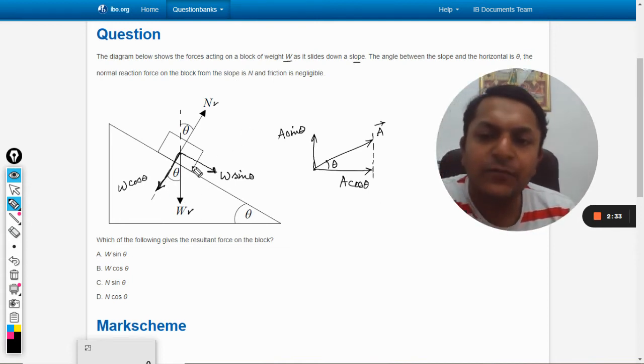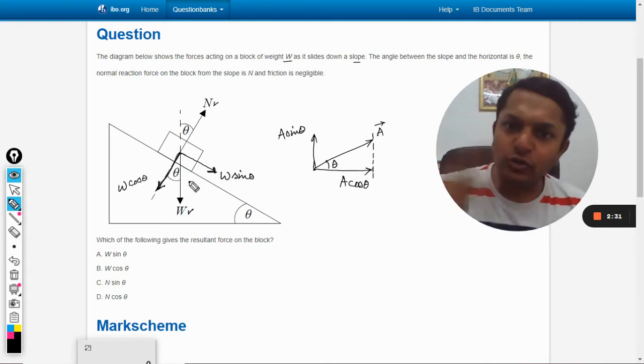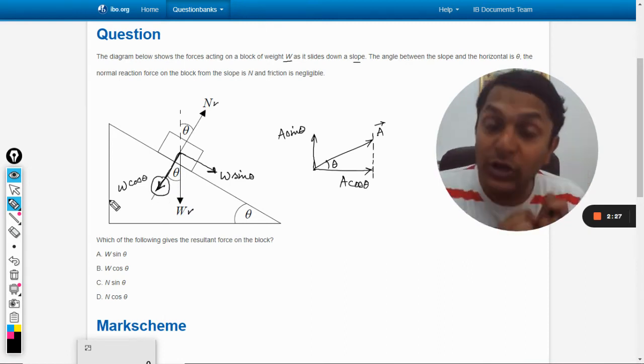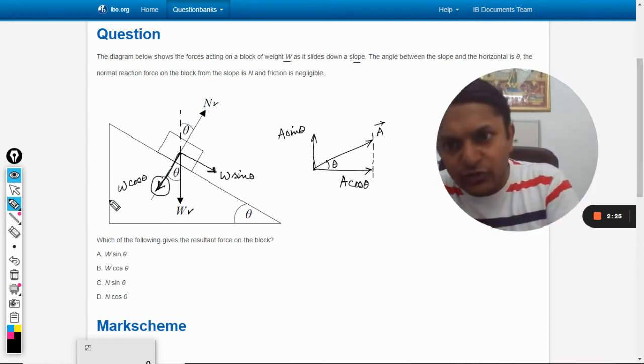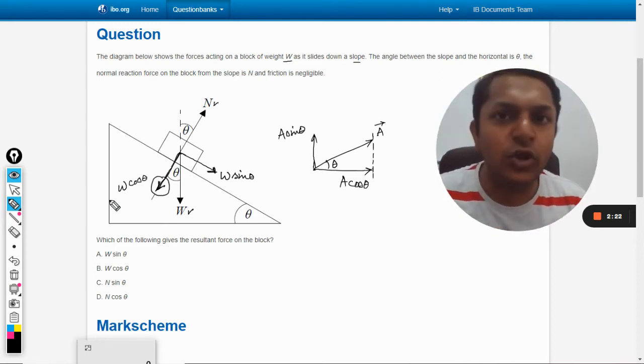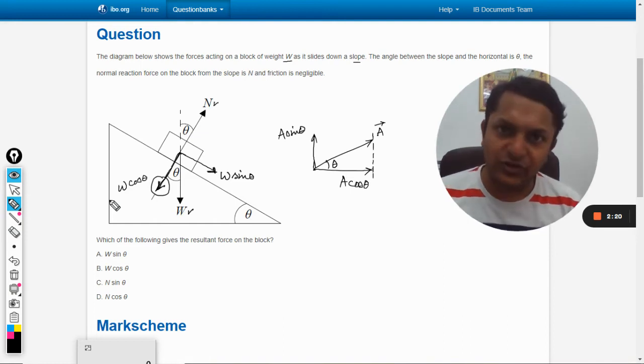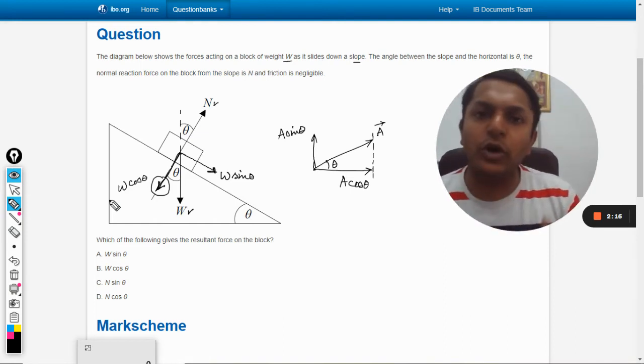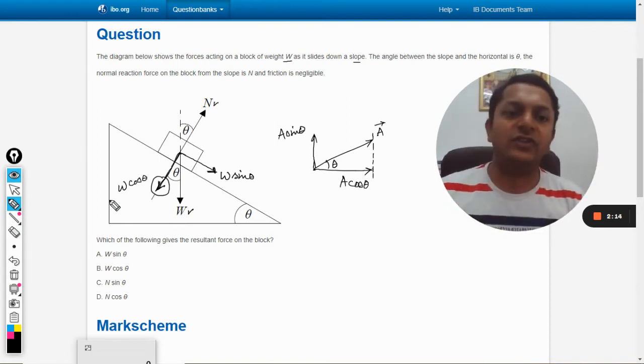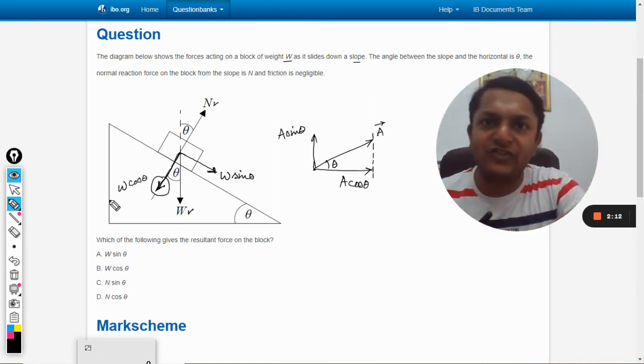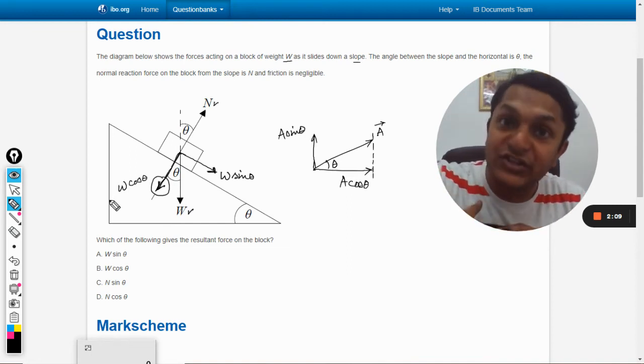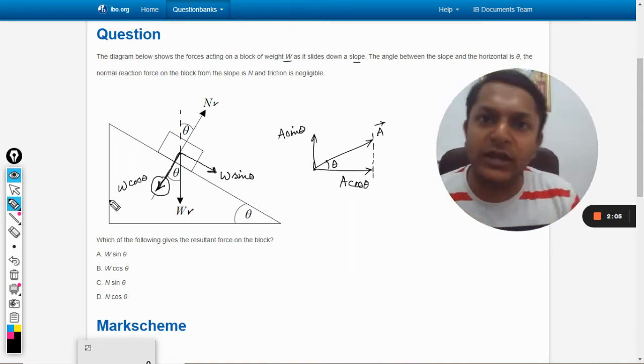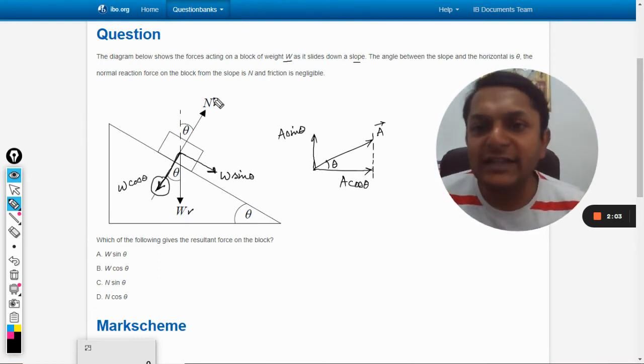So this W has been resolved into two. Now this W cos theta is pulling the body into the downward direction, but the body is not moving in that direction. My only question is when the force is acting on it, why is the body not moving into that direction? It cannot move into that direction because it is on a wedge and this inclined plane is providing an equal and opposite force on the body and that is known as normal reaction.